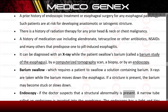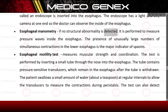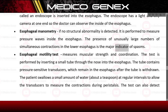If the doctor suspects a structural abnormality, a narrow tube called an endoscope is inserted into the esophagus; it has a light and tiny camera so the doctor can observe the inside. If no structural abnormality is detected, esophageal manometry is performed to measure pressure waves inside the esophagus. The presence of an unusually large number of simultaneous contractions in the lower esophagus is the major indicator of spasms.